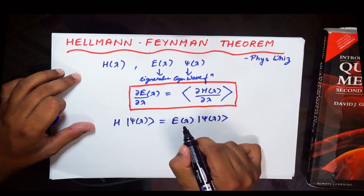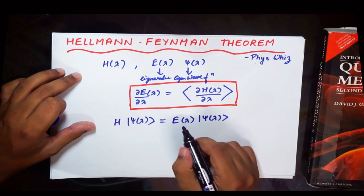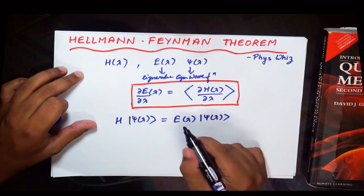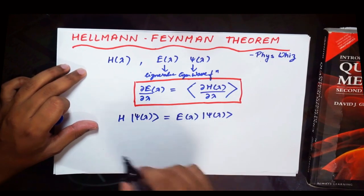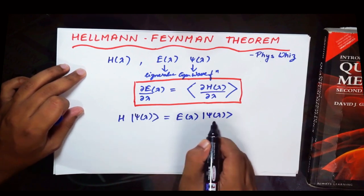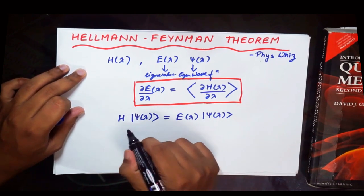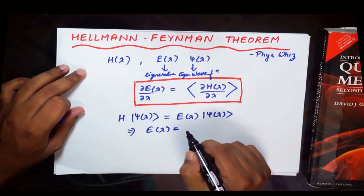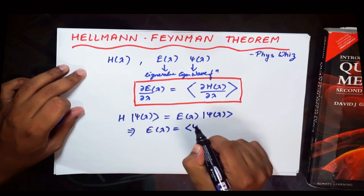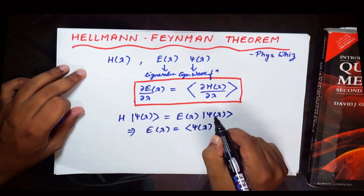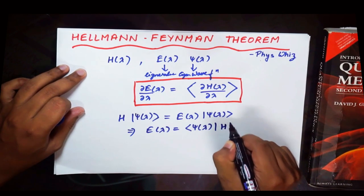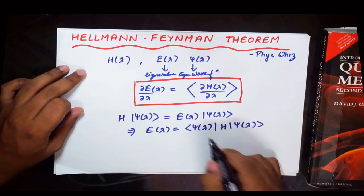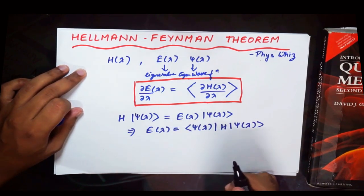Therefore these are the eigen energies or the eigenvalues. The eigenvalue of the Hamiltonian is basically energy. So that's why I'm using the notation E. And basically you can take this psi of lambda to write E of lambda as psi of lambda, that is the adjoint here, and then H and psi of lambda. And remember that psi of lambda are the normalized eigen functions of the Hamiltonian.